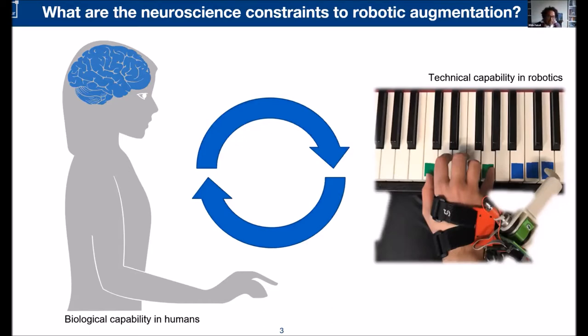That's interesting. But what happens if you now have an extra arm or an extra finger? Where does your brain control this system? And can it control the system while operating the other fingers simultaneously?